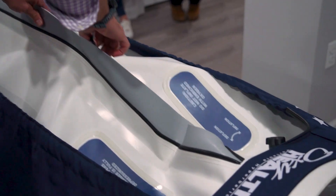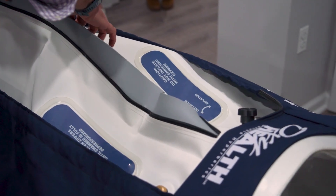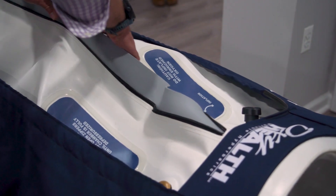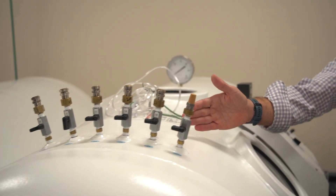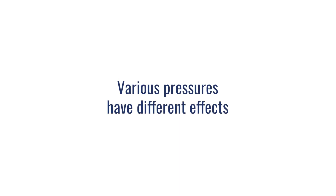We know that soft chambers have an absolute effect on human physiology. We know that there are benefits to using what's called mild hyperbarics or lower pressures, that 1.3 atmospheric range. We also know that there are benefits of 1.5, 2.0, and 2.5. There are different pressures that seem to have different effects ultimately on the patients.